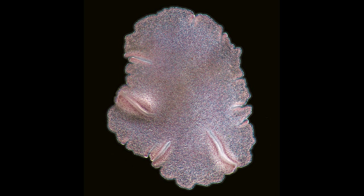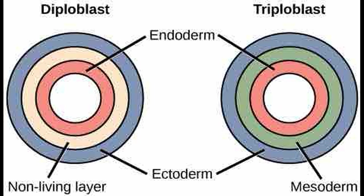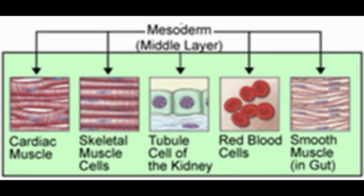Placozoans have a system that is extremely unusual for animals, where they secrete digestive enzymes into their surroundings, similar to fungi. All bilaterally symmetrical animals, though, are triploblasts, meaning they have three germ layers. The third layer is the mesoderm, which lies between the ecto- and endoderm. In vertebrates, the mesoderm gives rise to many cell types, including bones, muscles, and connective tissues.